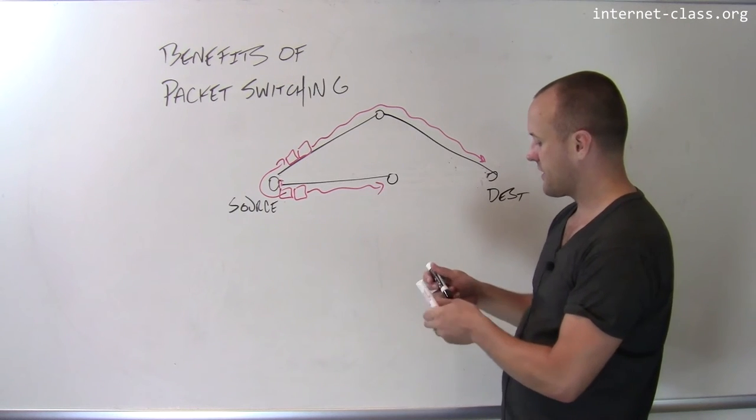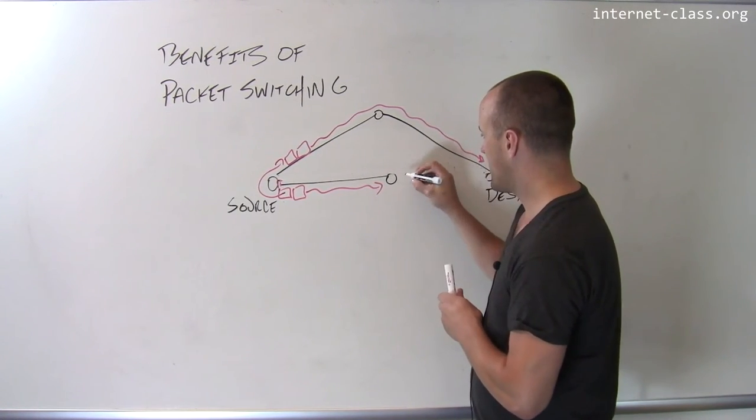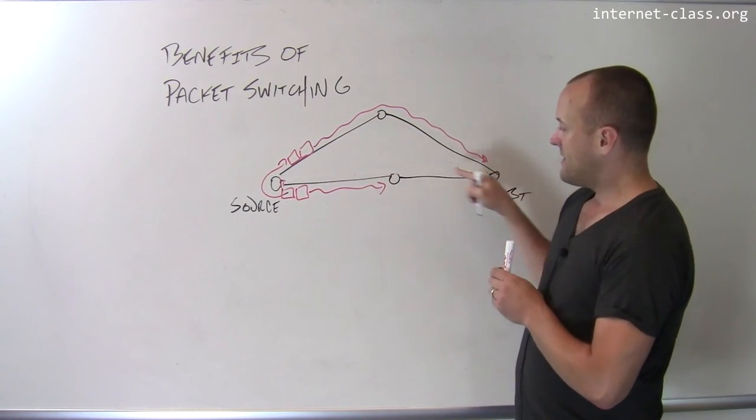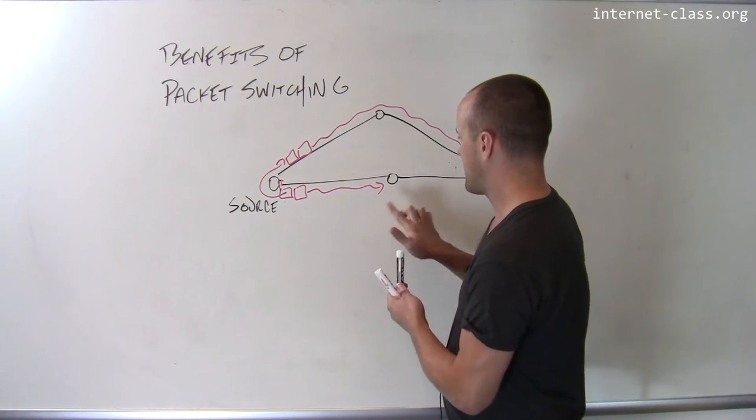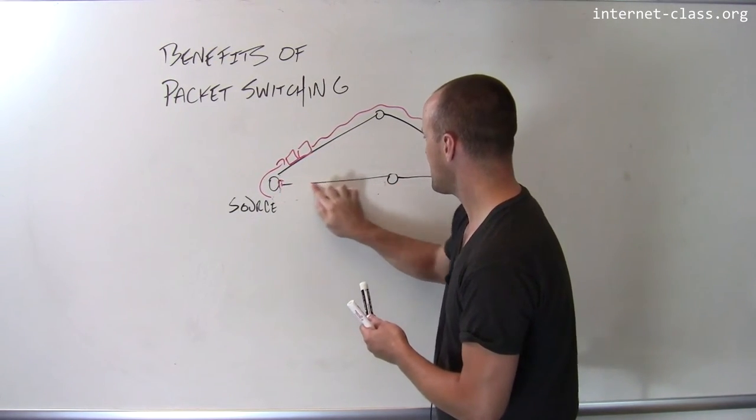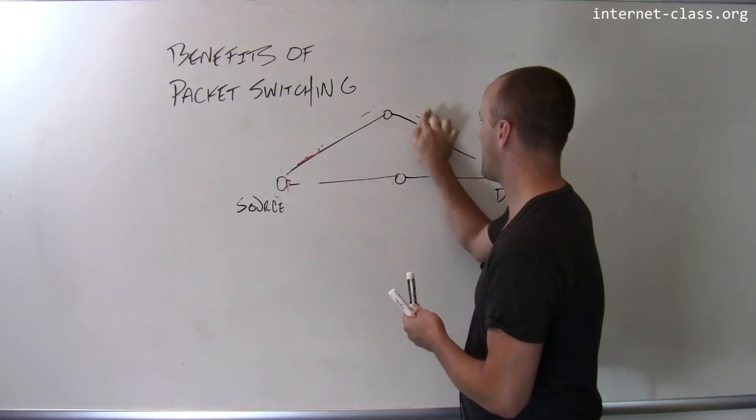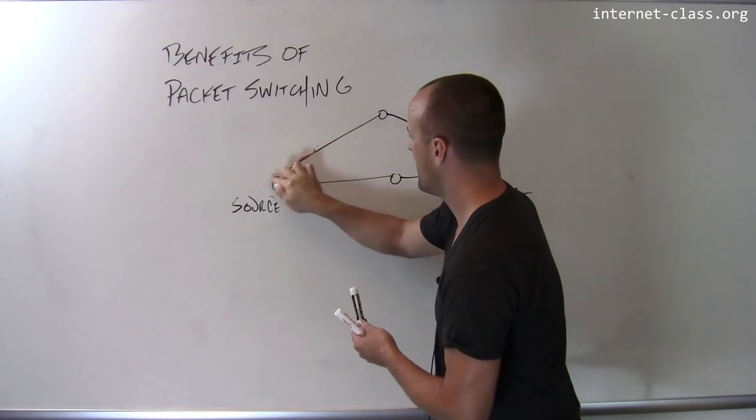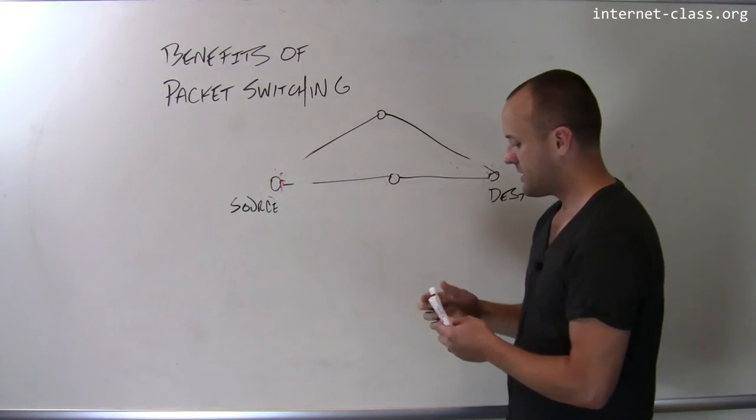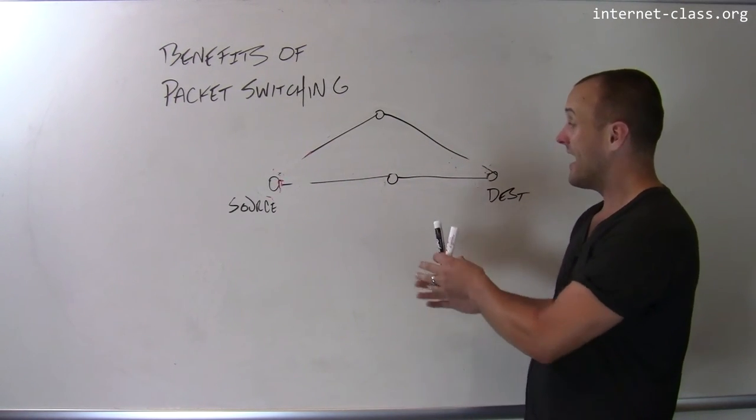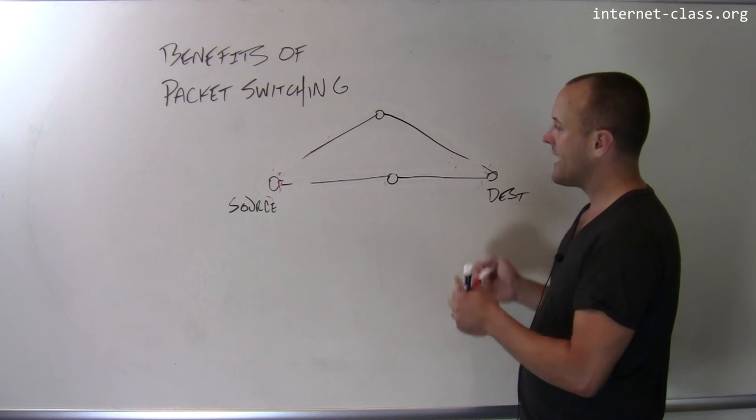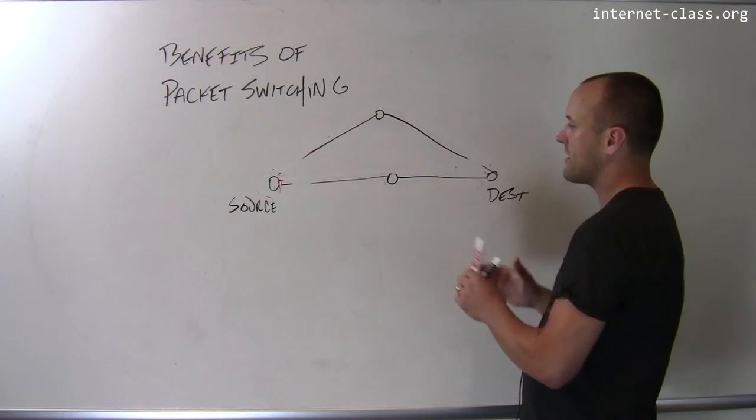So there's another interesting corollary here, which you might have noticed, which is that in this original scenario that I had set up, this circuit switch network, you might think the circuit switch network has in some amount more capacity because it reserves capacity beforehand. But it turns out that the circuit switch network in some ways has less capacity because the packet switch network can use both of these paths.